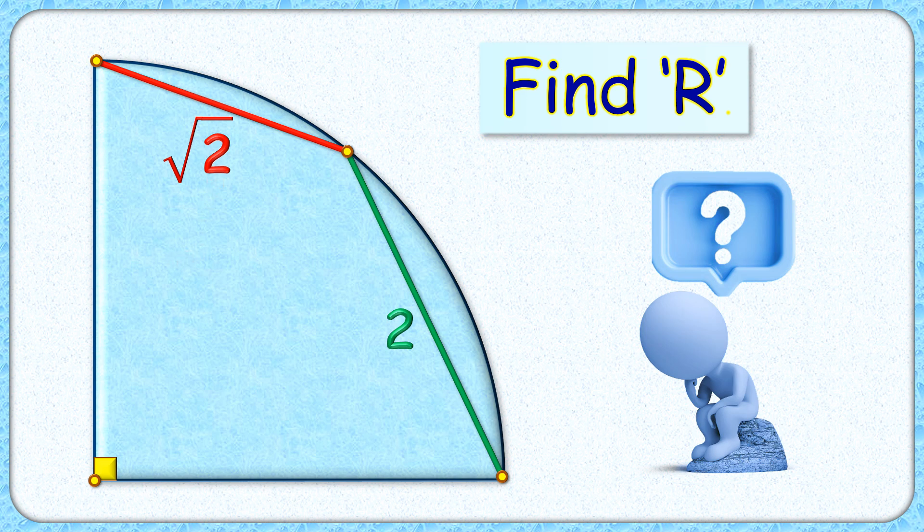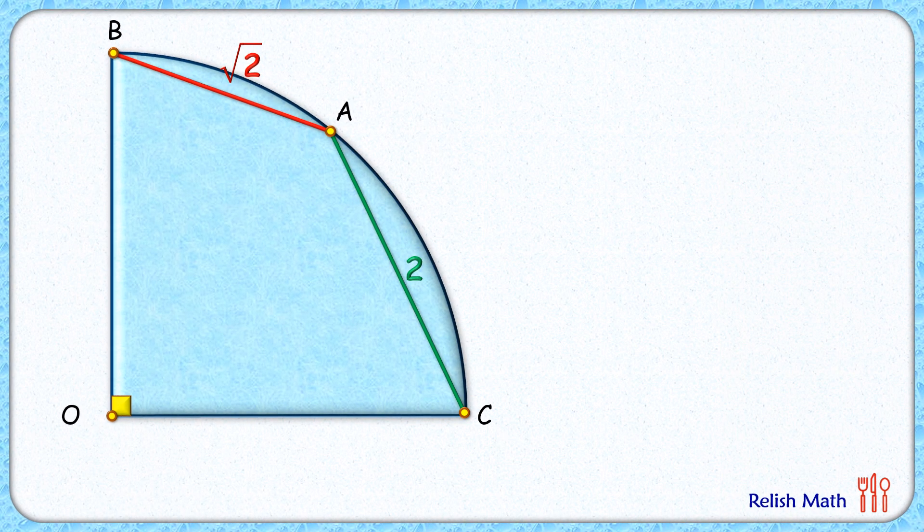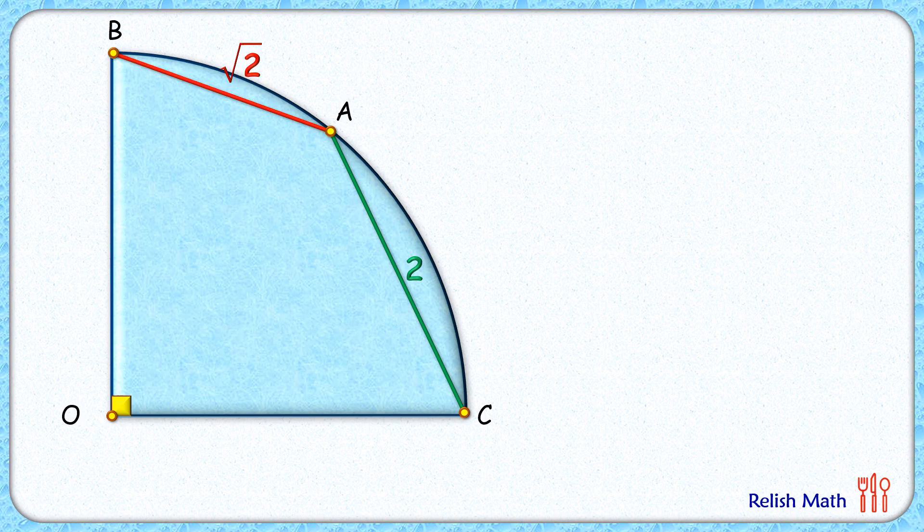Let's check this simple and elegant solution. Let's start by assuming the radius of this quadrant as R centimeter. Now if we complete the circle, then this white portion of the circle, this sector is forming an angle of 270 degrees at the center.